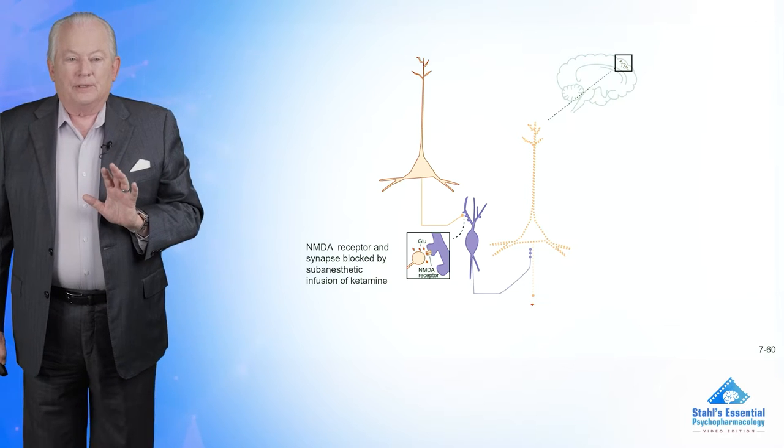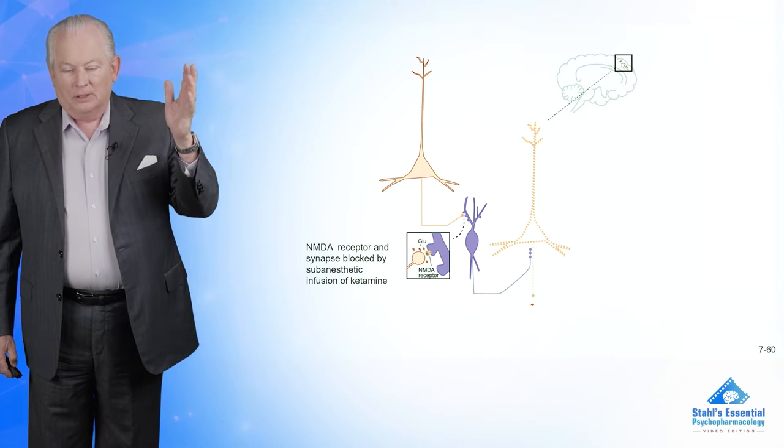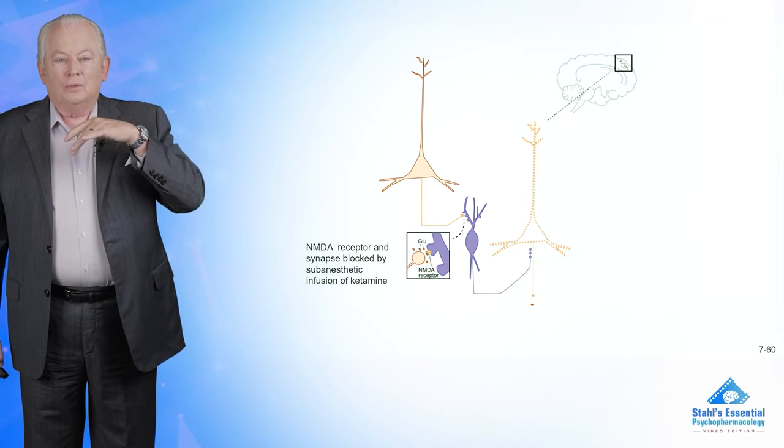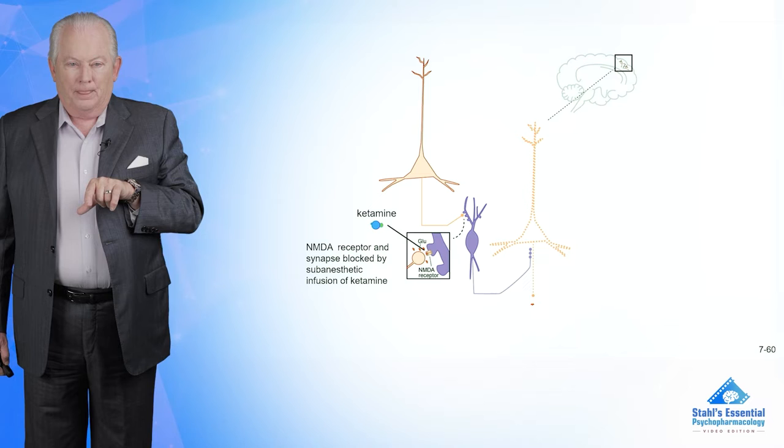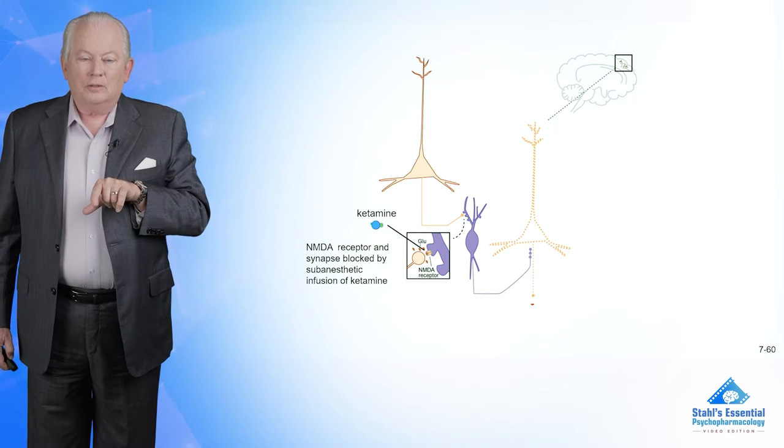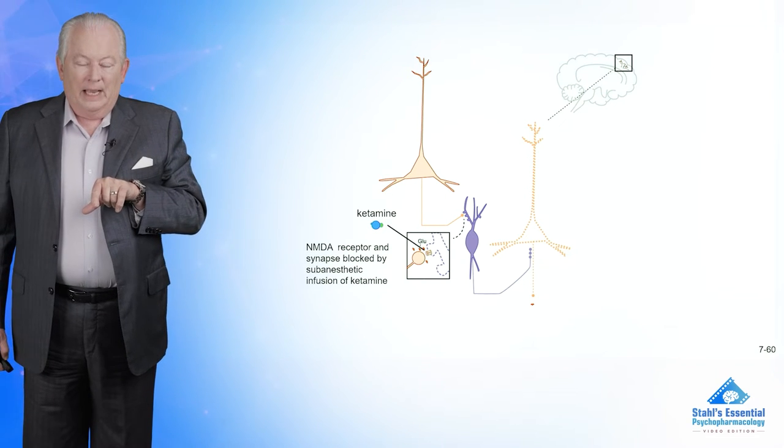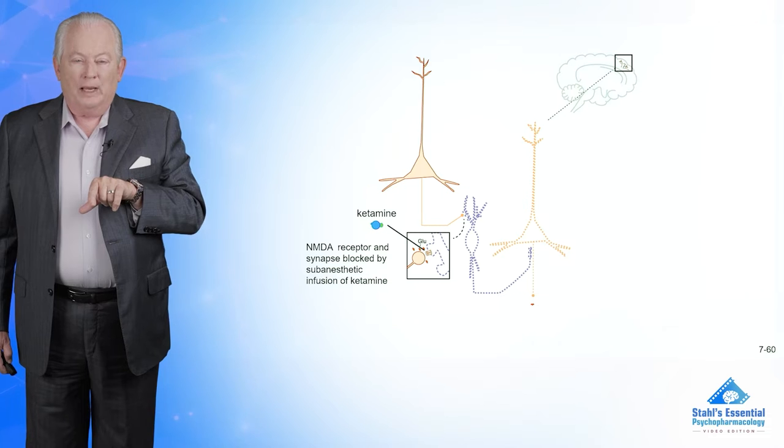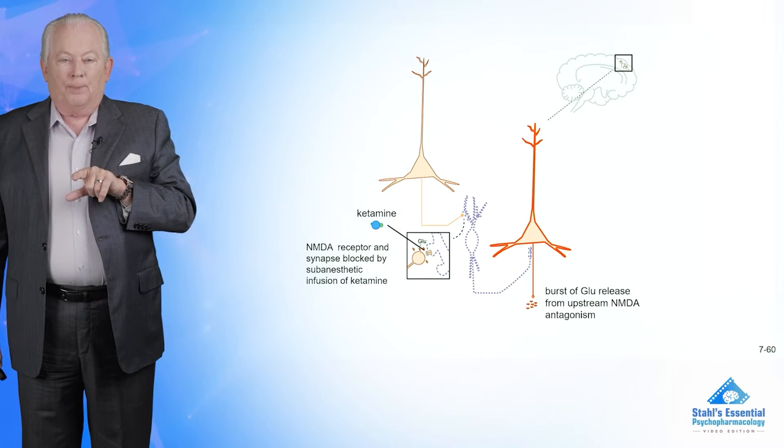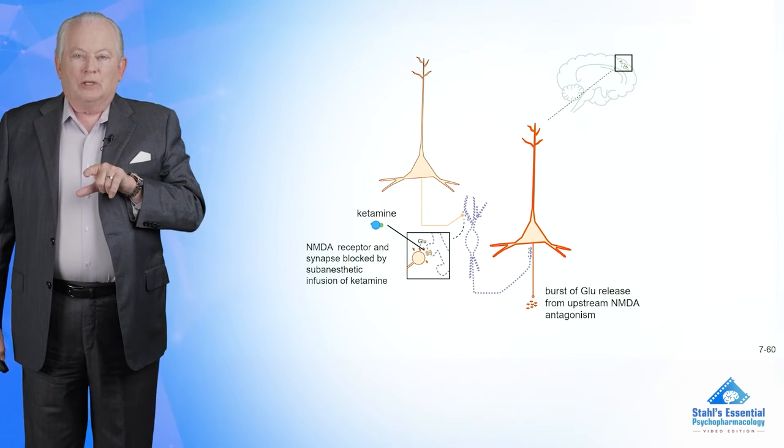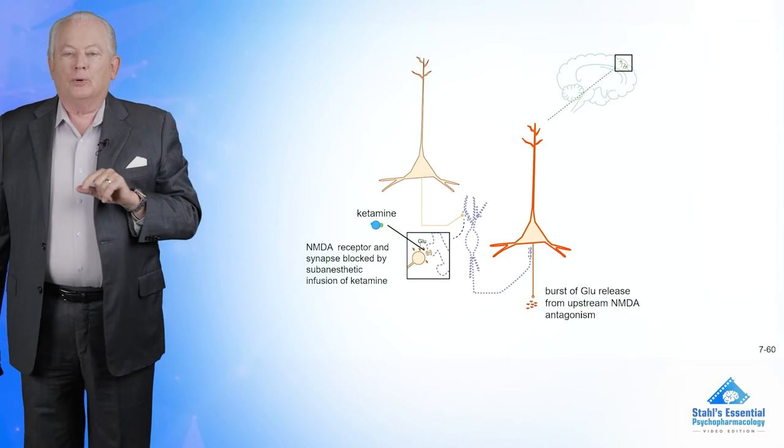Now, what happens if you take a sub-anesthetic infusion for about 90 minutes, and you block that NMDA receptor that we're showing there? Here we go. Ketamine's going to go right in there. Boop! Now glutamate can no longer excite because it's being blocked. And if the excitation of the purple neuron goes away, its inhibition downstream goes away, and the opposite occurs. Here you go, and there's your burst of glutamate!